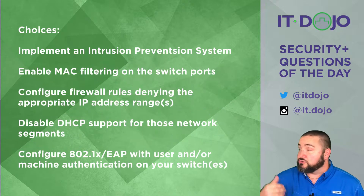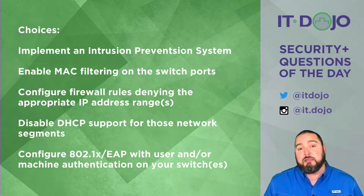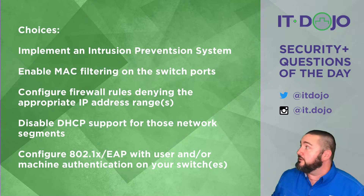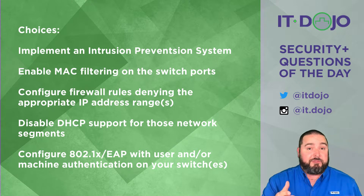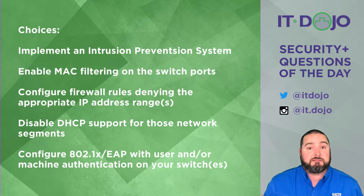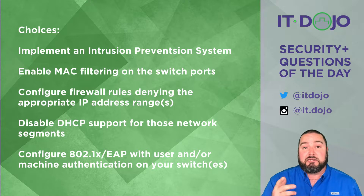You've got a bunch of answer choices right there. Go ahead and click pause, give them a read, and when you're ready, click play and we can talk about what's what. The first choice on the list says implement an intrusion prevention system. While implementing an IPS sounds like a great idea, it is not going to help you in this particular circumstance. It would tell you that somebody is connected to your network and may be transmitting data you didn't want transmitted, but it's not going to stop them from doing that, at least not in the context we need to talk about right here.